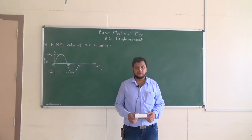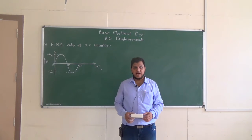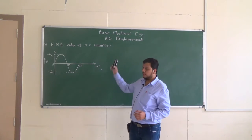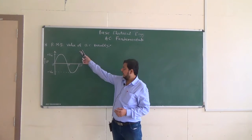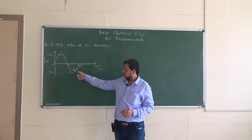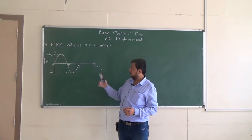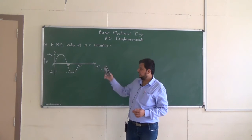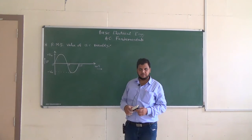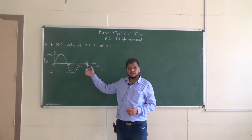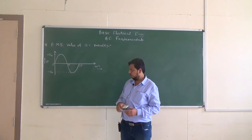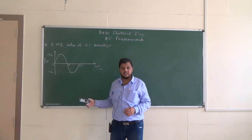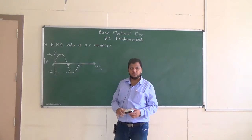Hello everybody. In this video session we will derive the RMS value of an AC quantity. This is the most commonly used value. Here we have considered the AC voltage. Whenever we say AC, by default it means sinusoidal. If it is other than sinusoidal then we have to mention specifically, like triangular, square, sawtooth and so on. We can also consider AC current — the same procedure applies.